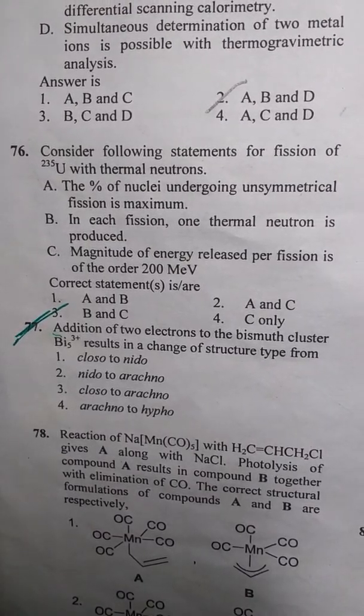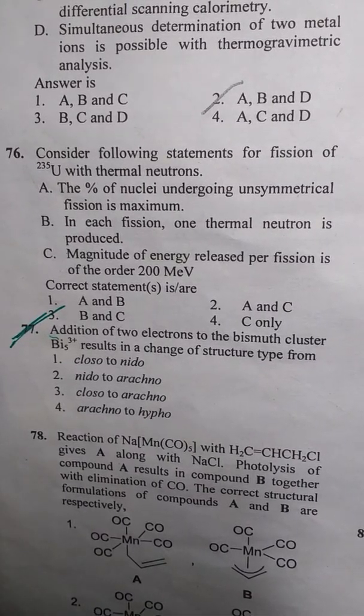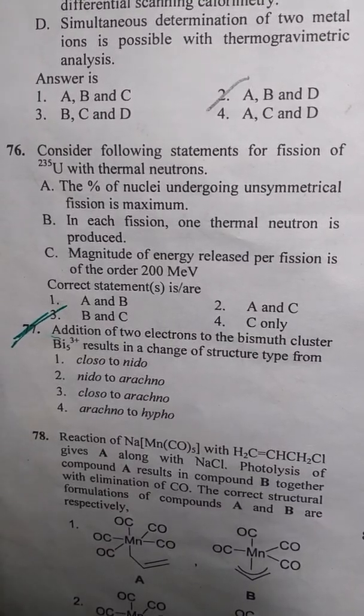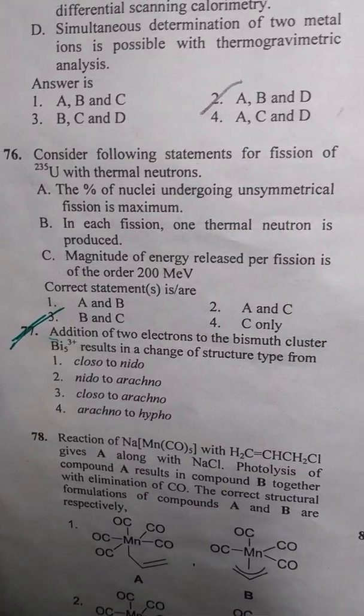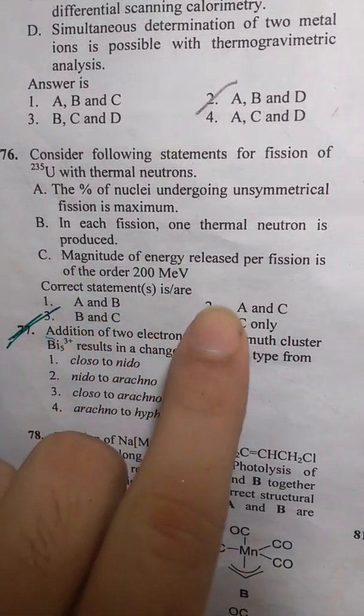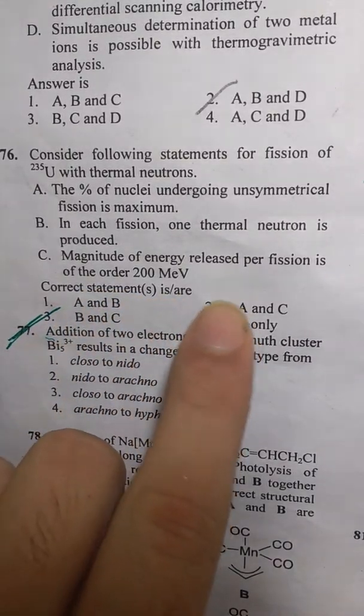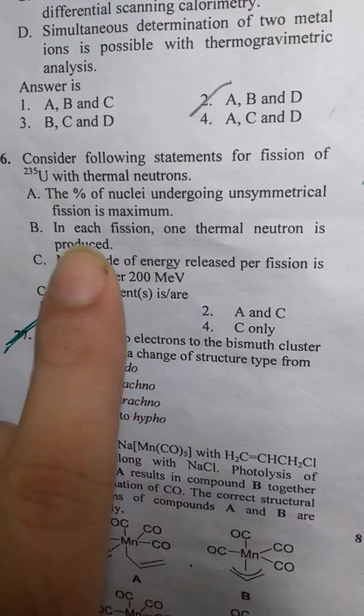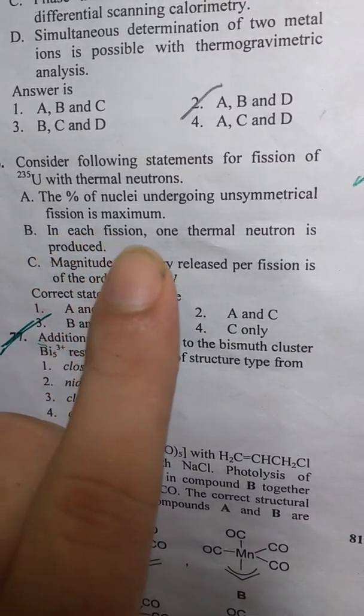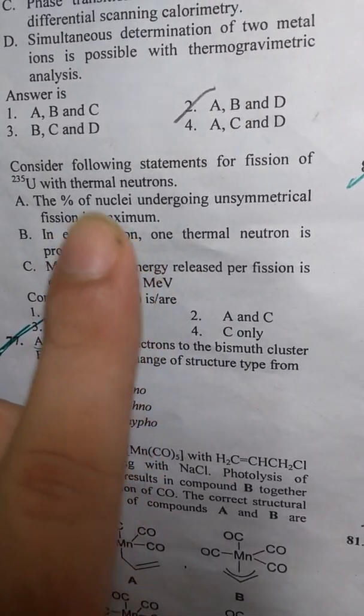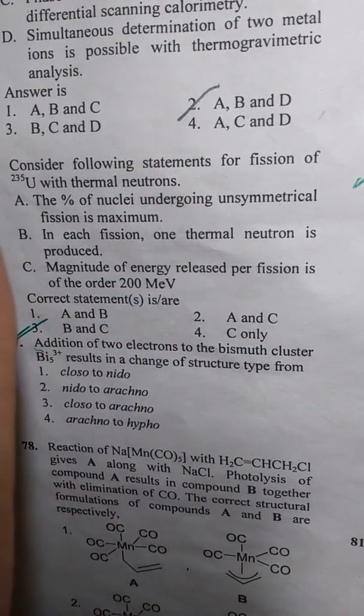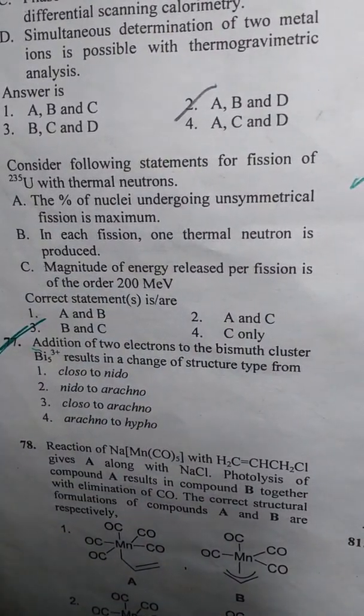Now question number 76 came from nuclear chemistry and was for 4 marks. If you look at the question, it's pretty factual. It states the magnitude of energy released per fission is of order 200 MeV, in each fission one thermal neutron is produced, and the percentage of nuclei undergoing unsymmetrical fission is maximum for U-235.